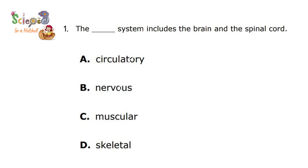Question number 1: What is the system which includes the brain and the spinal cord? The choices are circulatory, nervous, muscular, or skeletal. It will be nervous — because we said that the system that has brain, spinal cord, and nerves will be the nervous system.